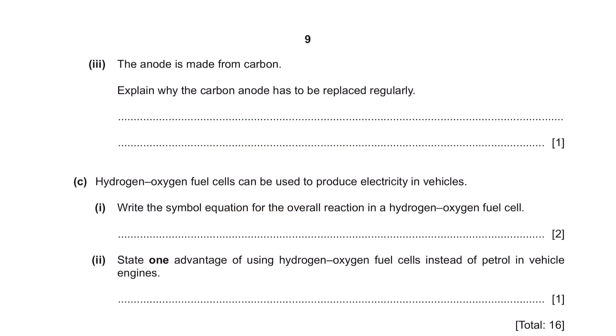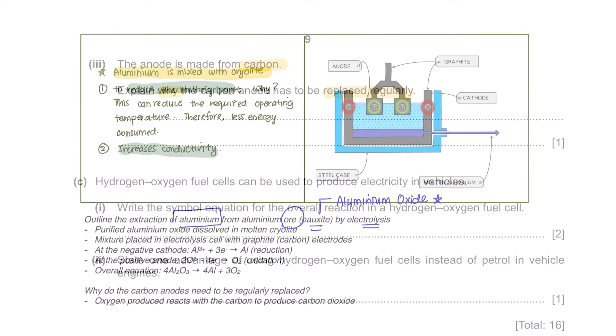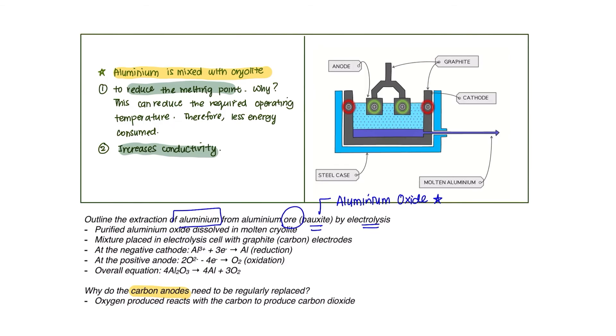Part 3. The anode is made from carbon. Explain why the carbon anode has to be replaced regularly. The reason why carbon anodes need to be replaced is because at positive anode, oxygen is formed, which will then react with the carbon to produce carbon dioxide. Therefore, the carbon has to be constantly replaced.